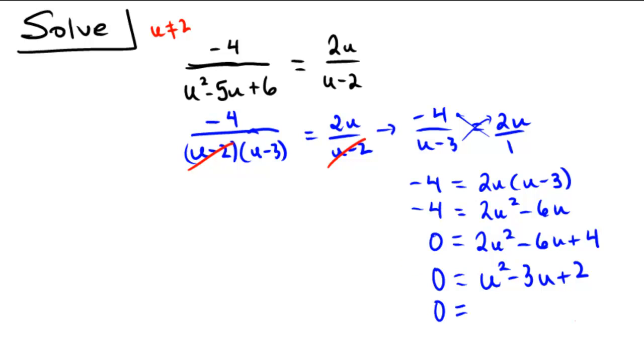So I may factor. What numbers multiply to 2 and add to negative 3? Well, that would be minus 2 and minus 1. Alright, so that means that our two solutions are going to be u equals 2 or 1.